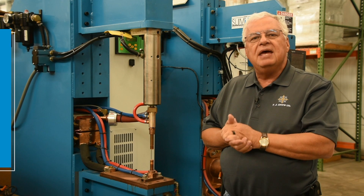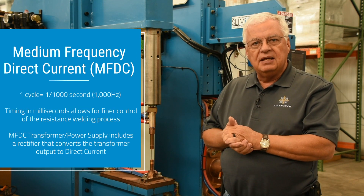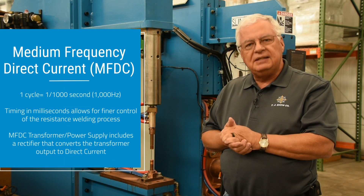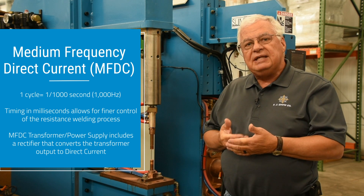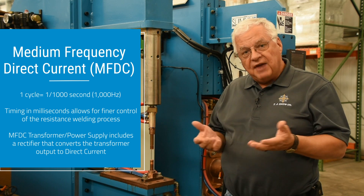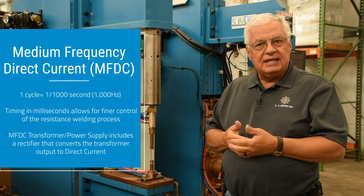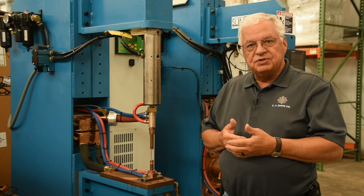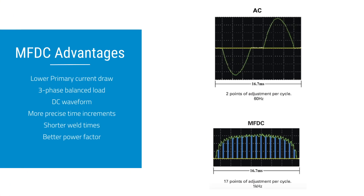Now let's talk about MFDC — medium frequency DC. Medium frequency DC is what's being used more and more today. There are some advantages of MFDC because it's at a thousand Hertz. That means we can adjust the weld times in thousandths of a second, whereas with AC it's in sixtieths of a second. So we can adjust our times to a much finer degree with MFDC.